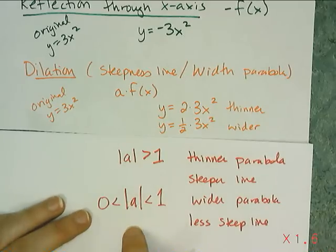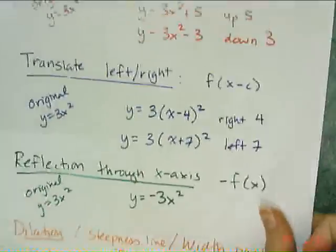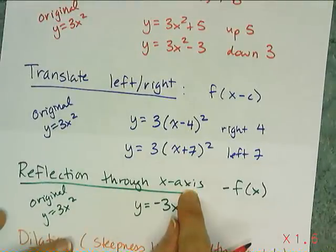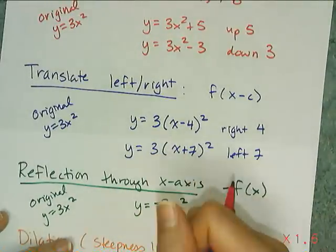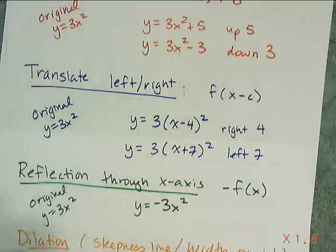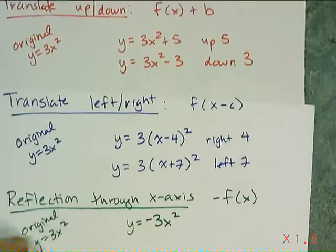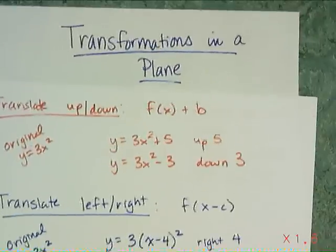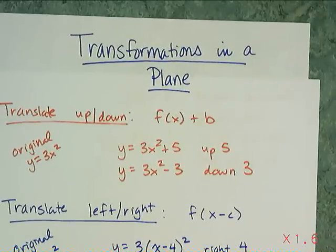And remember, it's the absolute value, because the sign tells us a reflection through the x-axis. So it's going to change from happy to sad or vice versa and increasing to decreasing or vice versa. And that's how you transform a graph in a plane by manipulating the equation.